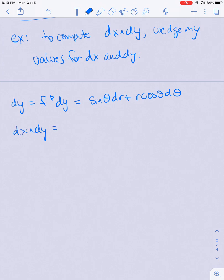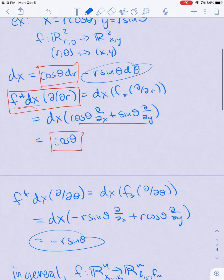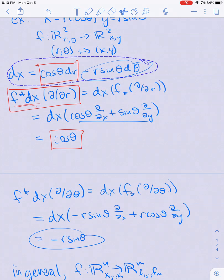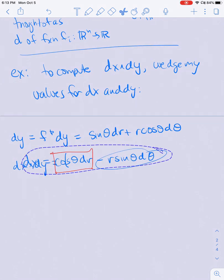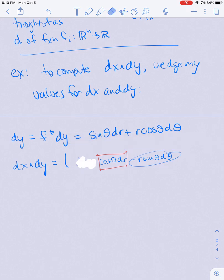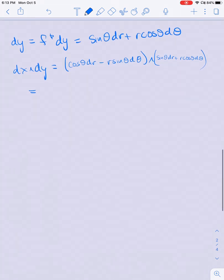So then dx wedge dy is equal to... and what I end up getting, so only the dr wedge d theta terms will remain, the dr wedge dr and d theta wedge d theta terms will disappear. I can see that this will end up being r cosine squared theta plus r sine squared theta dr wedge d theta, which is just r dr wedge d theta.